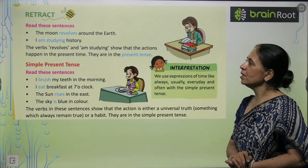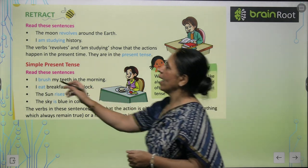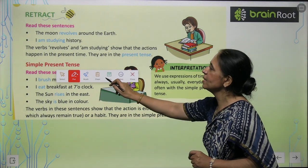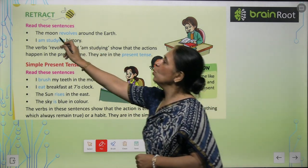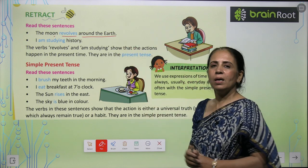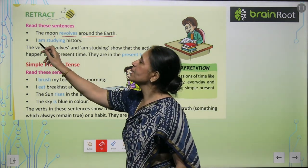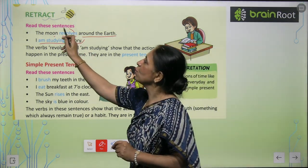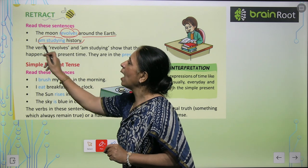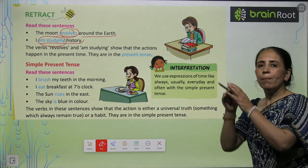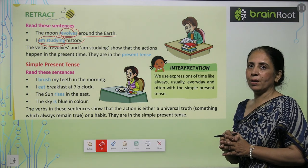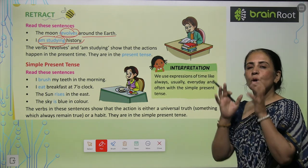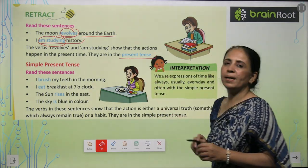So let's begin with the journey and let's quickly retrace. Read with me — we are going to read these sentences loudly. 'The moon revolves around the earth.' 'I am studying history.' Now if you look at the words 'revolves' and 'am studying,' these show a present time action.